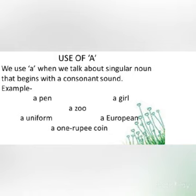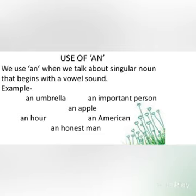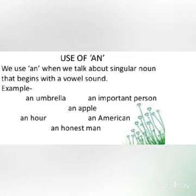Now let's see the use of 'an'. We use 'an' when we talk about a singular noun that begins with a vowel sound. For example, 'an umbrella' — here 'u' is a vowel. 'An important person.' 'An apple.' 'An R' — here 'H' is silent and we are saying the vowel sound 'O'.